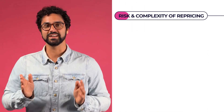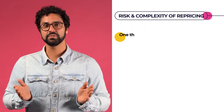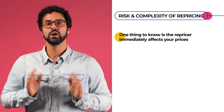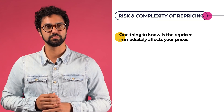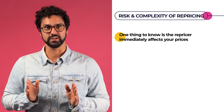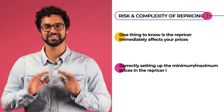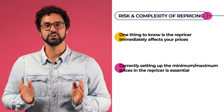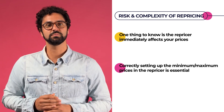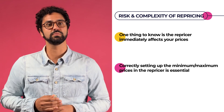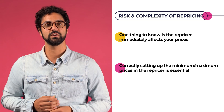Besides the fact that the repricer has many advantages to winning the buy box and outperforming your competitors, using it is complex and comes with risks. The repricer immediately affects your prices when you turn it on, so we recommend starting with a small number of products to monitor them closely. Correctly setting up the minimum and maximum prices is essential. If you set the price really low, you might lose your margins. But if you set the price too high, the risk is that you outprice yourself and Amazon or bol.com thinks your price is not fair and will take your products offline.